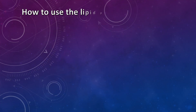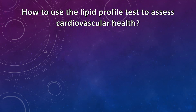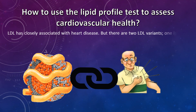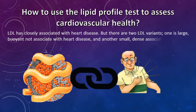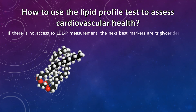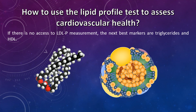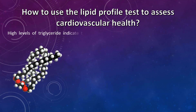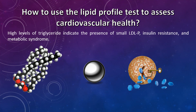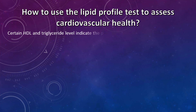How to use the lipid profile test to assess cardiovascular health. LDL is closely associated with heart disease, but there are two LDL variants: one is large and buoyant, not associated with heart disease; another is small and dense, associated with heart disease. If there is no access to LDL particle measurement, the next best markers are triglycerides and HDL. High levels of triglycerides indicate the presence of small LDL particles, insulin resistance, and metabolic syndrome. Certain HDL and triglyceride levels indicate the presence of dangerous LDL-B particles.